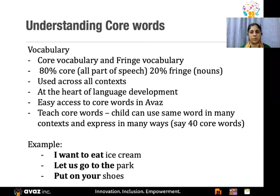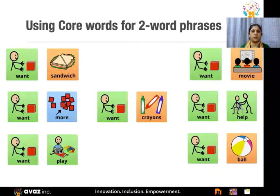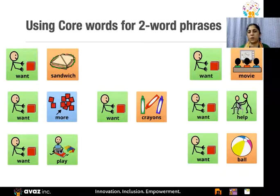Core words are much more powerful to learn and use because they are at the heart of language development. Once the child is able to use core words, they can use them across multiple contexts and therefore be more expressive in many different ways. Even with about 30 to 40 core words, the child can express themselves in a variety of ways. Using just the word 'want' with multiple objects and activities — eating, playing, watching a movie — the child can get their needs met.